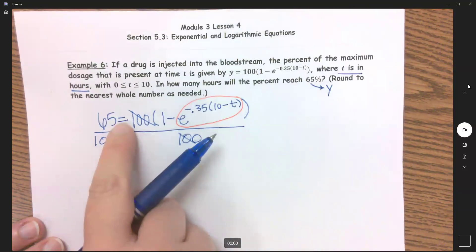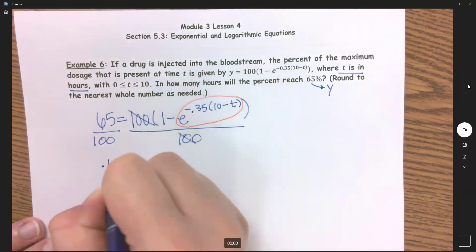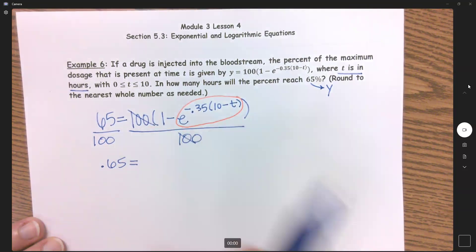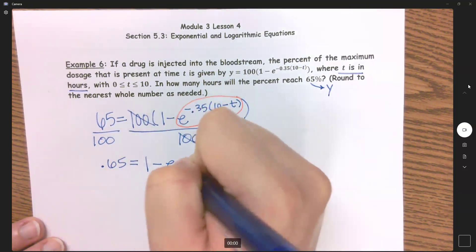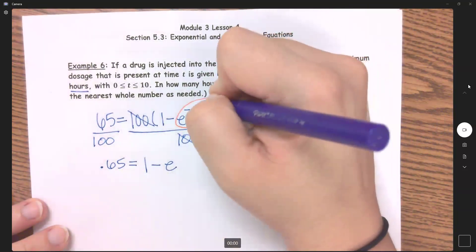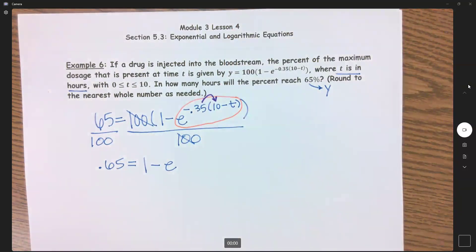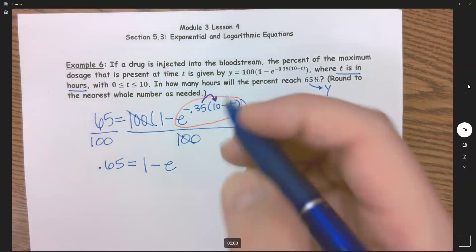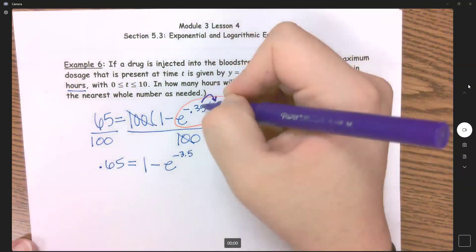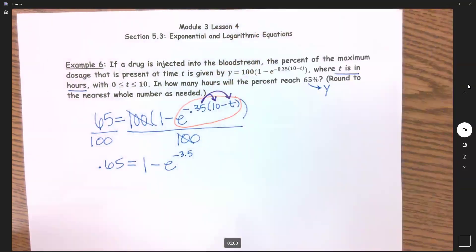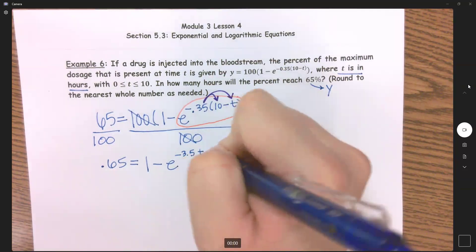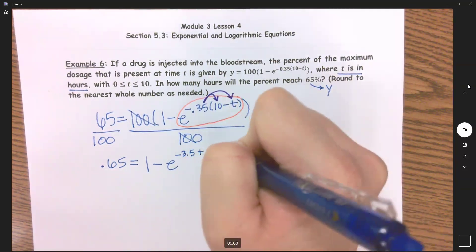When I divide by 100 that just moves the decimal two times, and so now I get 0.65. Because I'm losing that 100, I lose that first set of parentheses, and I am going to go ahead and distribute here. So I'm going to do negative 0.35 times 10, and that's going to give me negative 3.5. Negative 0.35 times negative t is positive 0.35t.